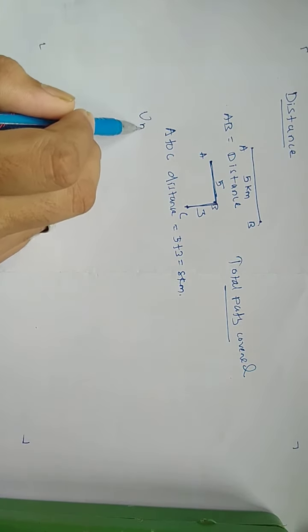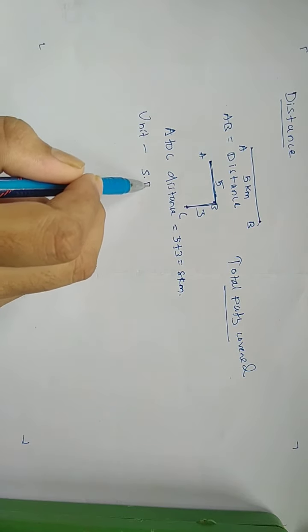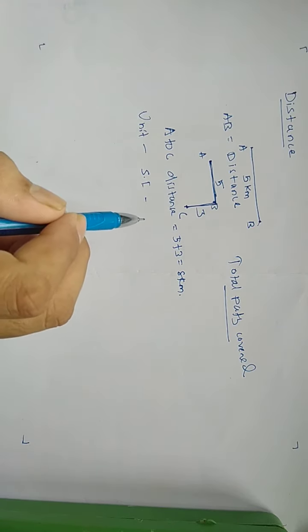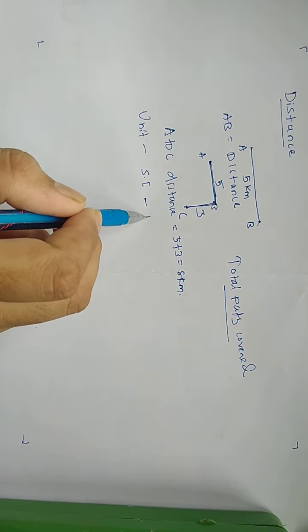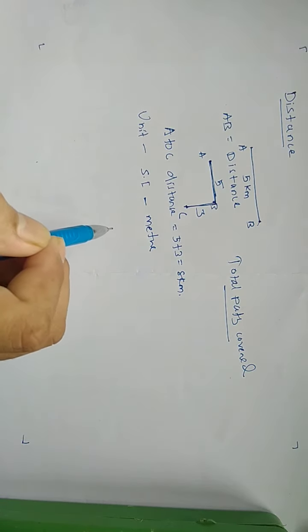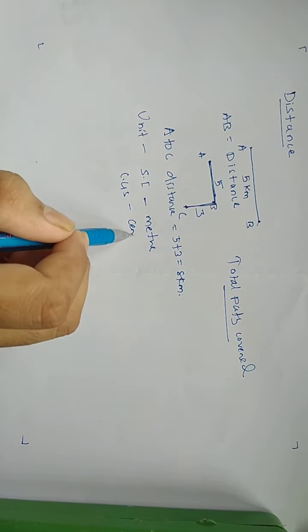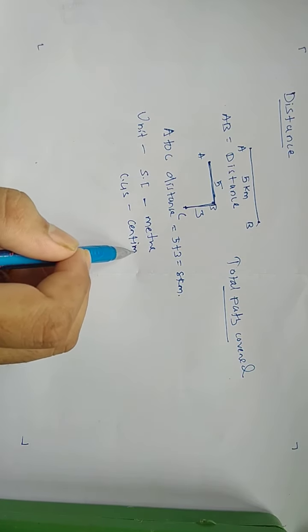Now we come to what is the unit of distance. We are taking the SI unit and the CGS unit. The SI unit is meter, and the CGS unit is centimeter.